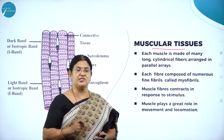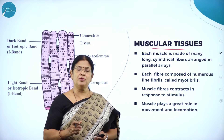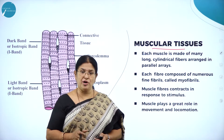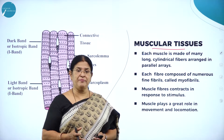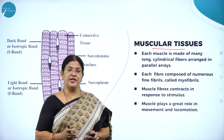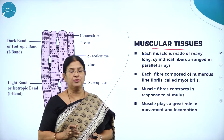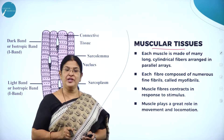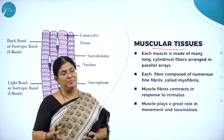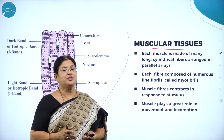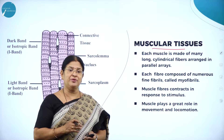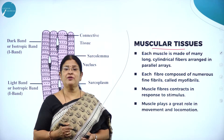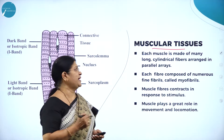Bone and blood are called specialized connective tissue. Bone is a supporting tissue of the body which gives it a particular shape and structure, and blood is in a liquid medium and is mainly responsible for carrying important nutrients from one part of the body to the other. Moving on to muscular tissue — imagine if only bones were there but no muscles, or only muscles but no bones. Bone and muscles are like the two faces of a coin, both very important for the body, and the flexible movement of the body is mainly made possible by muscular tissues.